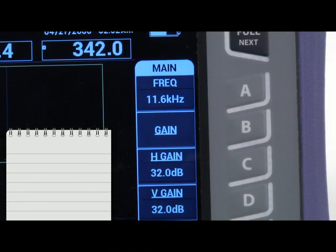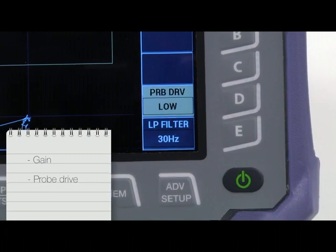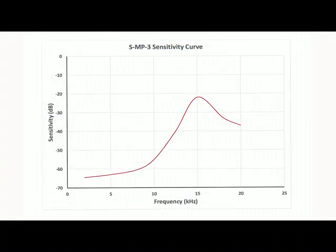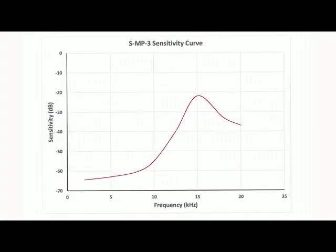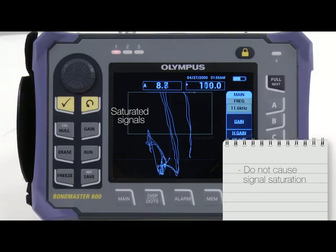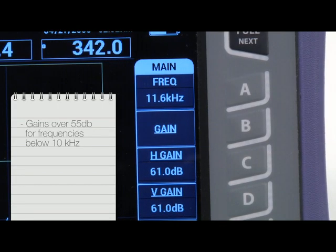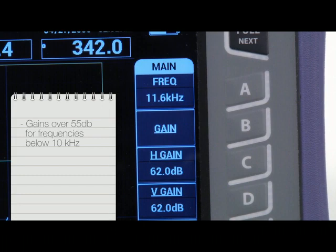The next critical parameter to set is the gain and/or probe drive. Since the MIA probe exhibits a strong difference in sensitivity along its frequency range, it is critical to ensure that the combination of gain and probe drive does not cause signal saturation.